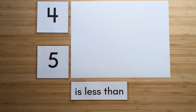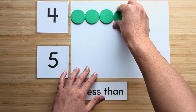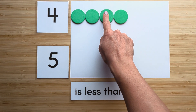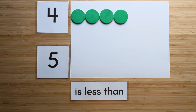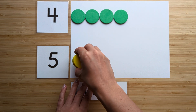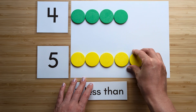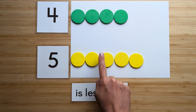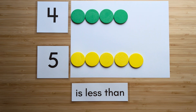Make the number four. Point and count: one, two, three, four. Make the number five. Point and count: one, two, three, four, five.